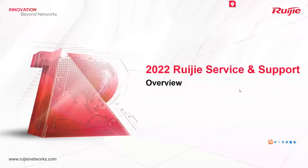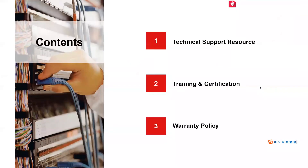Now let's see the service and support overview. We have three parts: technical support resources, training and certification, and warranty policy. The first covers what resources are available when you use Ruijie devices; the second is about training and certification; and the third is about warranty policy.